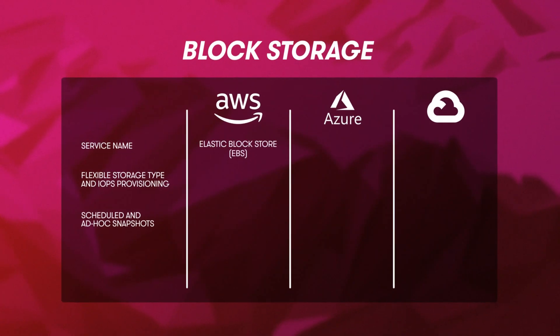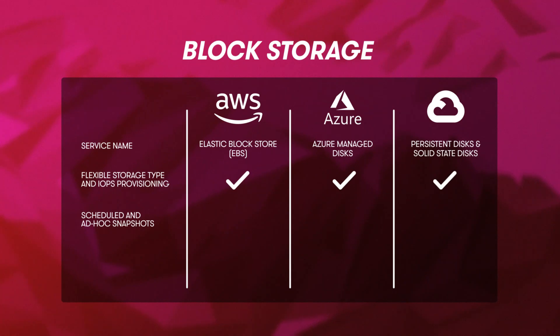If you have the need for speed, block storage is where it's at. Think of block storage as just a raw hard drive — it's going to usually provide the highest IOPS. All the cloud providers have block storage options because it's pretty much required to run virtual machines. Block storage is what lets our virtual machines boot into their operating system. AWS has Elastic Block Store, Azure calls theirs Azure Managed Discs, and GCP calls theirs Persistent Discs and Solid State Discs. You can provision a very fast SSD device or save some money with more traditional magnetic hard drives. Scheduled and ad hoc snapshots allow you to back up, restore, and duplicate your block storage devices, and encryption is easy across all providers.